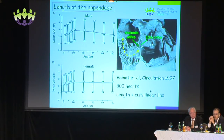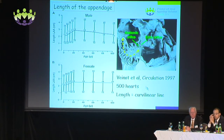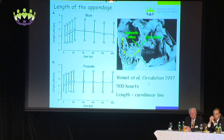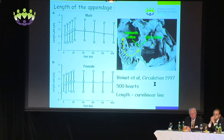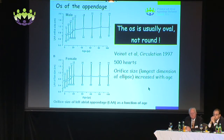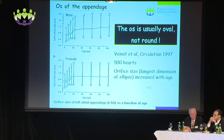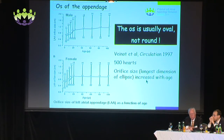In terms of the length of the appendage, this study also looked at male versus female across age — it seems like there's some growth in the length of the appendage that then tails off with older age. In terms of measuring the echo orifice versus the anatomic orifice, there is some distinction — the echo orifice being from the ridge area down to the side, whereas the os was further towards the appendage itself. The study also observed that the os is usually oval rather than round, with an ellipsoidal shape whose long dimensions increased with age. But occasionally we can find teardrop-shaped or even triangular-shaped os as well.